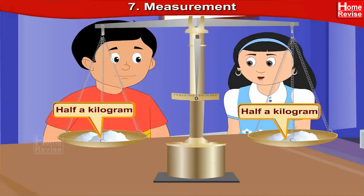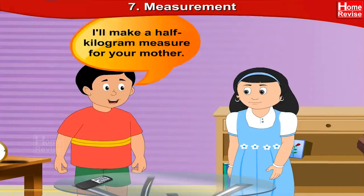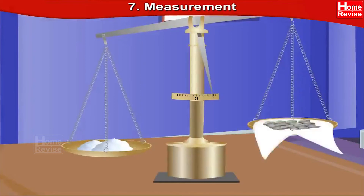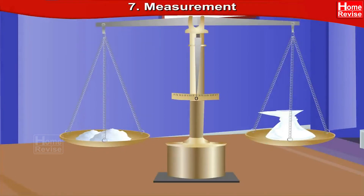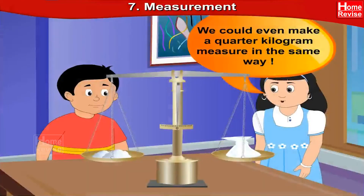Wow, that's a great idea! My mother also often needs half a kilogram of something. I will make a half kilogram measure for your mother. I will put the leftover half a kilogram of sugar in one pan and some small stones in the other to balance the sugar. I will tie those stones in a handkerchief and that will be a half kilogram measure. We could even make a quarter kilogram measure in the same way.